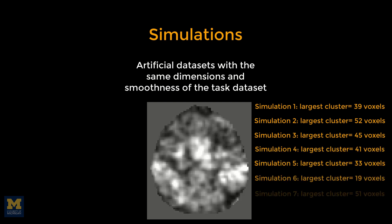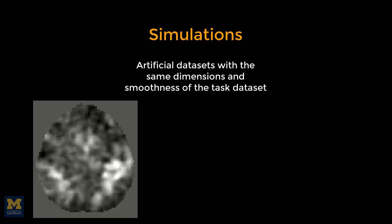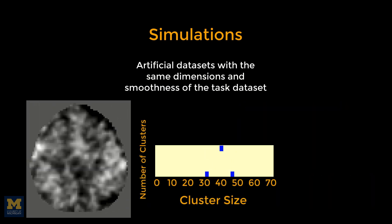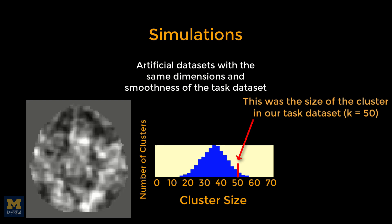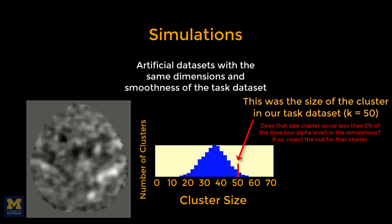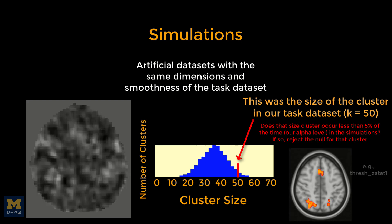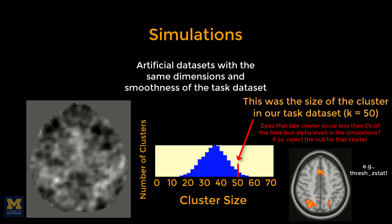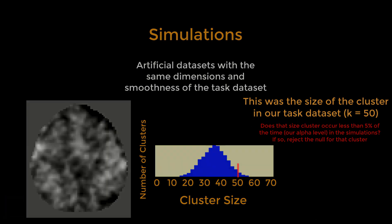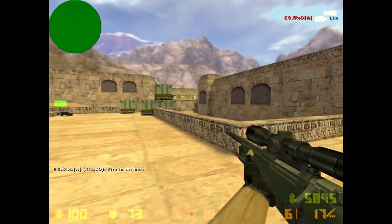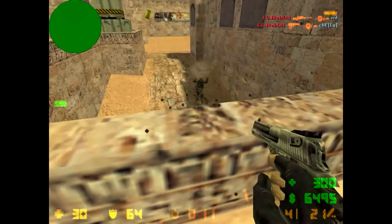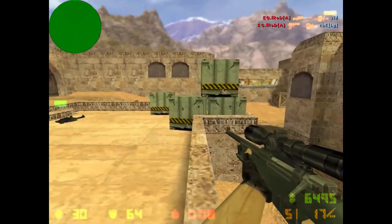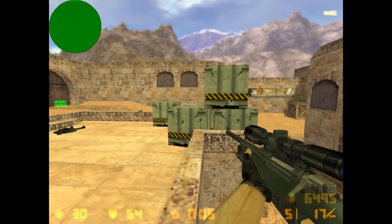If we do this thousands and thousands of times, we can create a distribution of maximum cluster sizes. From this distribution, we can calculate the percentage of the time we would observe a cluster as large as the one generated from our task dataset. If that percentage is lower than our alpha level of 5%, we can reject the null hypothesis for that cluster. These are the clusters automatically generated by FSL and stored in images with the thresh prefix. Afterwards, all that's left is to publish that paper, go home, put some hot pockets in the microwave, and watch your favorite Counter-Strike 1.6 demos — because, as we all know, Global Offensive just isn't that good.